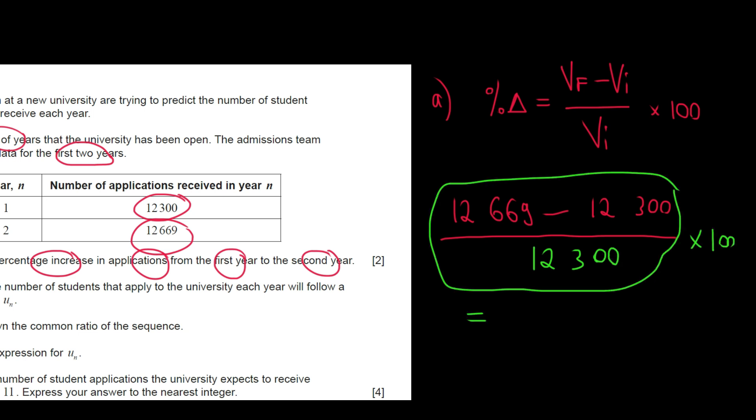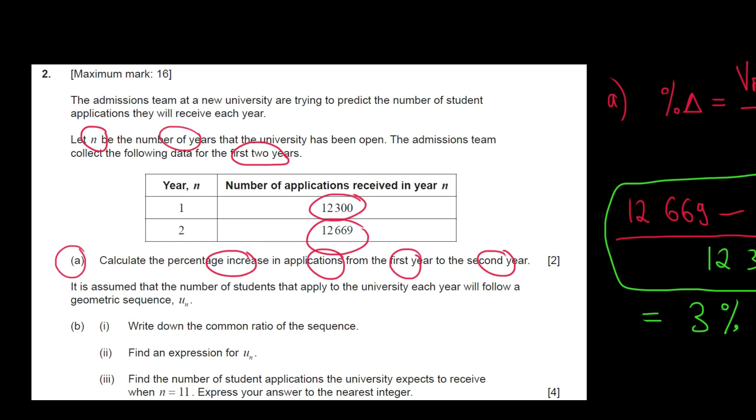So this result would be 3%. That's it. That's part A. Let's continue.